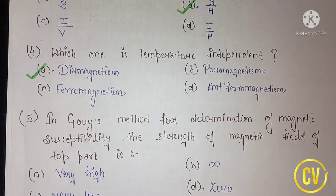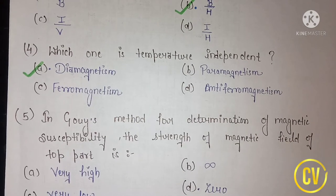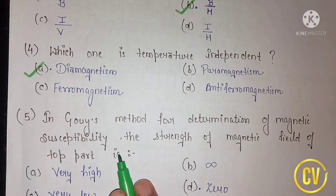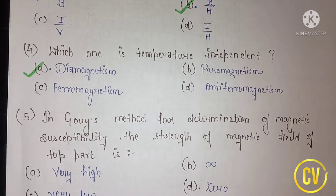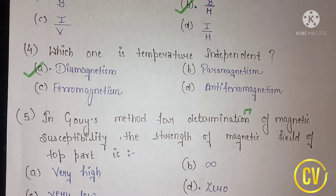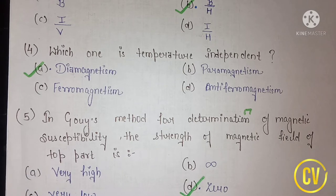Question number 5 is about Gouy's method. Gouy's method is used for determining magnetic susceptibility. In this method, the strength of the magnetic field at the top part is what you are finding, and that value is always zero.